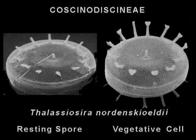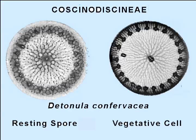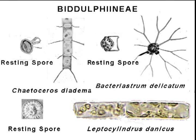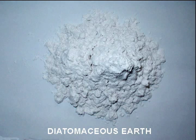In response to unfavorable conditions like depleted nutrient levels in the neritic zone, many planktonic species develop a form with a stouter skeleton, a diatom resting cyst called a statospore.